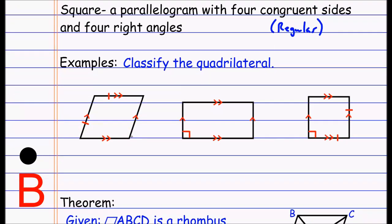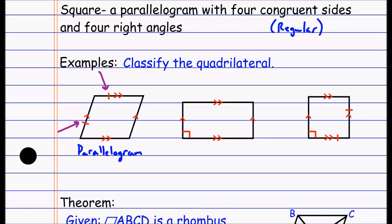For the first example, I start with the most basic classification: is it a parallelogram? The opposite sides are parallel, so yes — write down parallelogram. Then I check for rhombus. I see this side is congruent to this side, and since it's a parallelogram, opposite sides are congruent too. Looking around the figure, every side has one tick mark, meaning all sides are congruent — so this one's a rhombus.